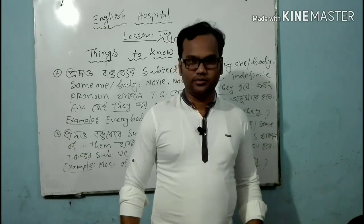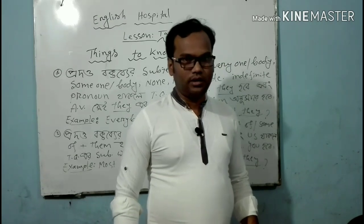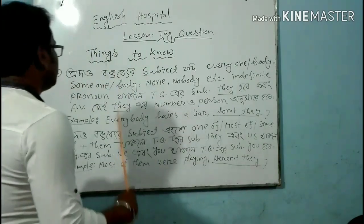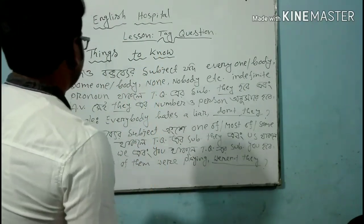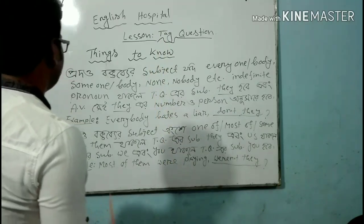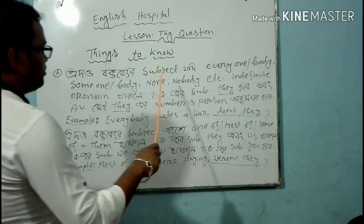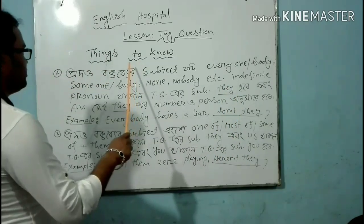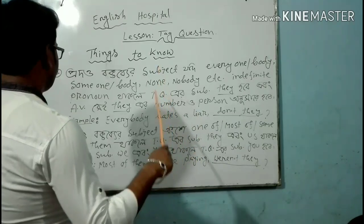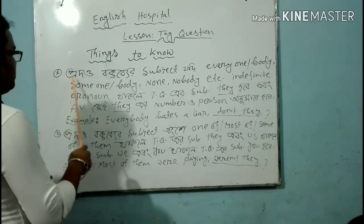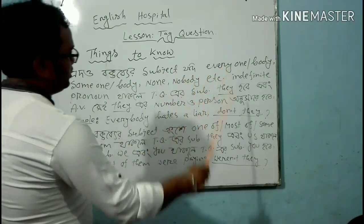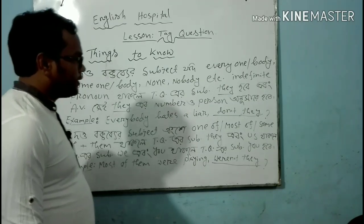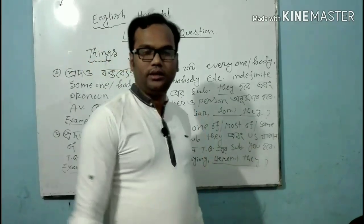Today I will discuss in detail. I have written things to know — if you want to answer the questions correctly, you will have to know these rules. Number one: if the subject is an indefinite pronoun — everyone, everybody, someone, somebody, no one, nobody — these are indefinite pronouns.